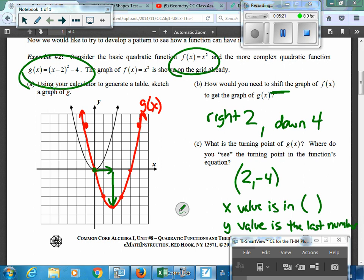So as you do exercises 3 and 4, just kind of look at where the turning point moves. And again, be specific. Like I said here, I didn't just say up or down. I said down 4. I didn't say left or right. I said right 2. So make sure you use specific directions when you're saying how it shifts.